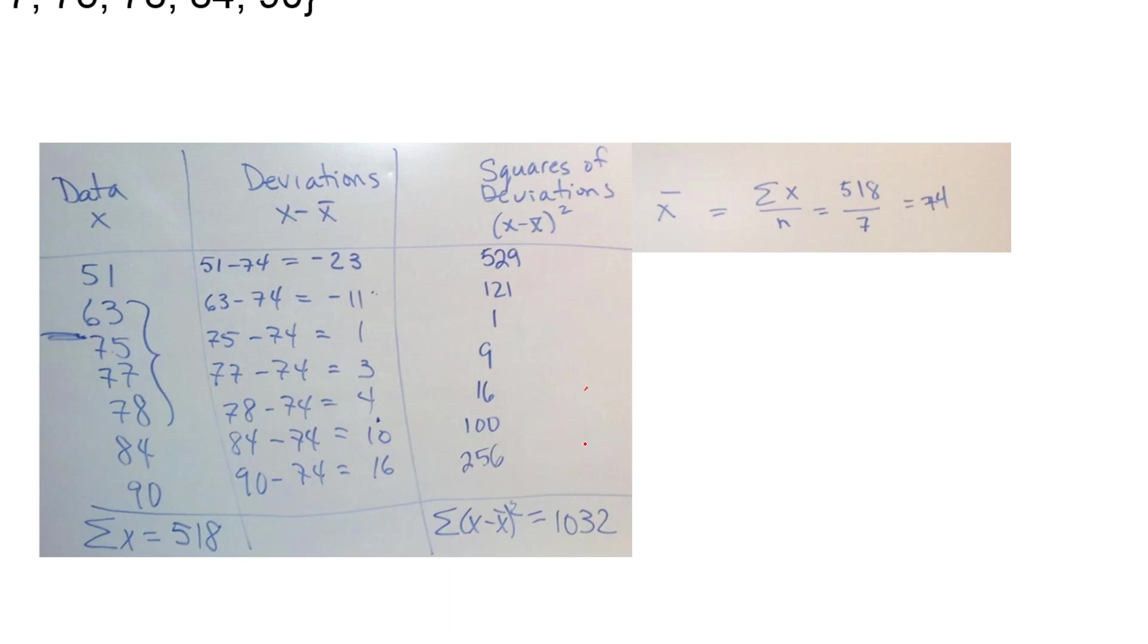So it should be 529, 121, 1, 9, 16, 100, and 256. For our formula for the standard deviation we need the sum of the squares of the deviations. So you add that column up and that should give you 1032. Is that what you got?